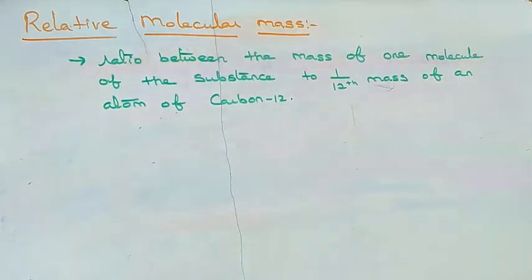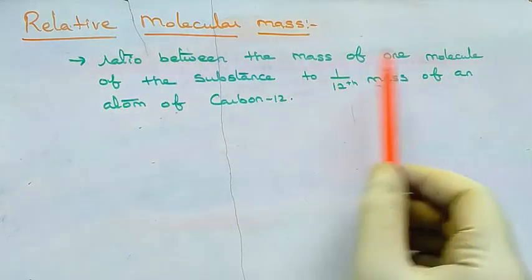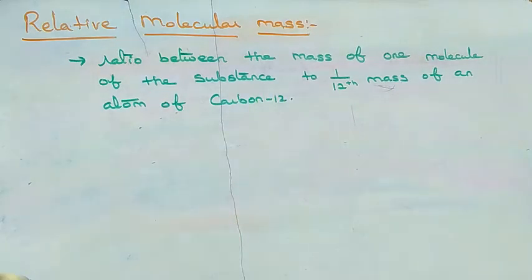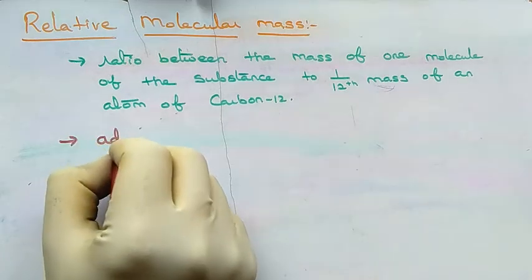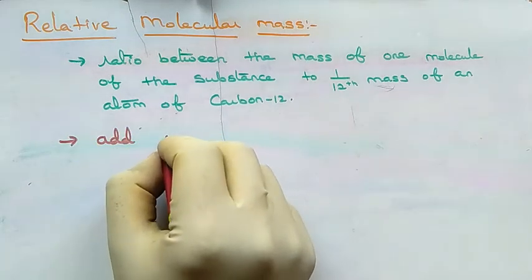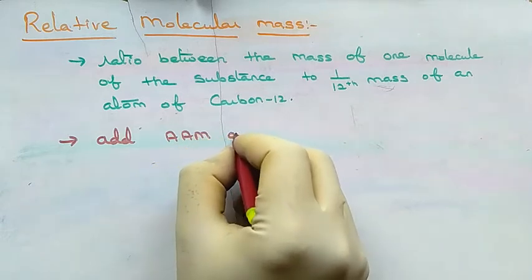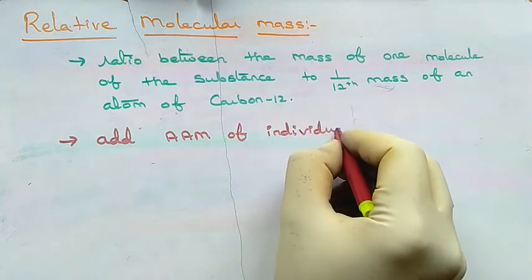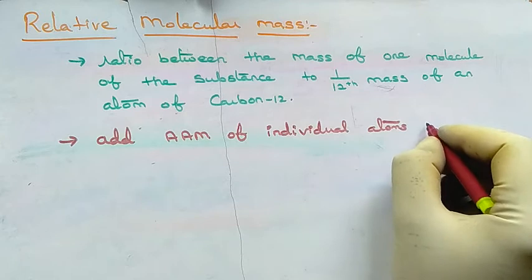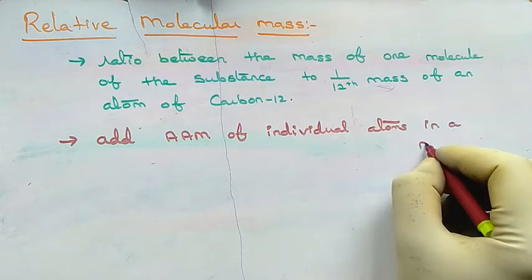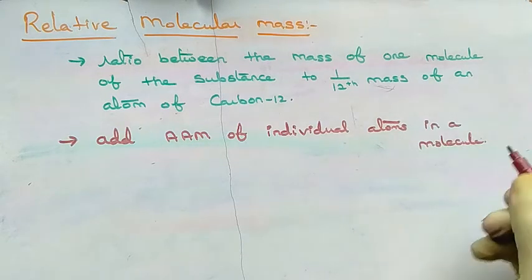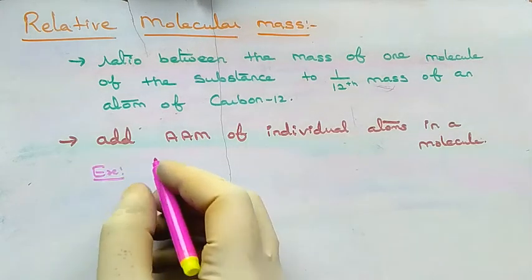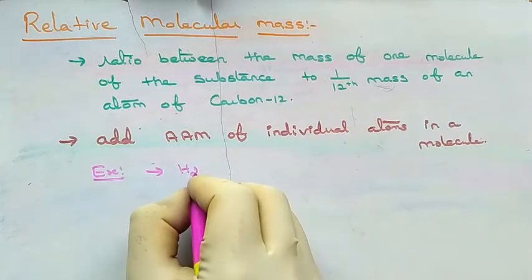Next we are going to see how to calculate relative molecular mass. Relative molecular mass is the ratio between the mass of one molecule of a substance to one-twelfth the mass of an atom of carbon-12. To make it simple, we calculate it by adding the average atomic mass of individual atoms present in the molecule.